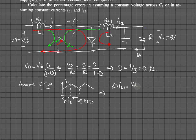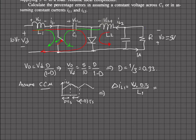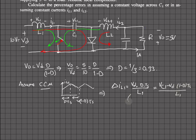During the on period, the voltage is V_d for duration d·Ts, and dividing by L1 gives the ripple current. During the off period the voltage seen is V_C1 minus V_d, multiplied by (1 minus d)·Ts divided by L1. Both expressions give the same result — this is how we derive the output voltage characteristics.